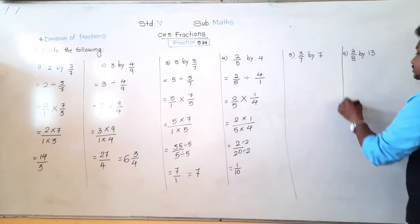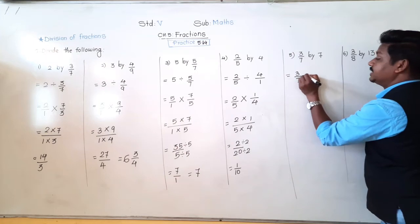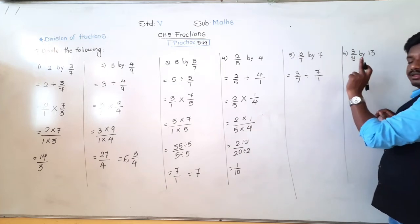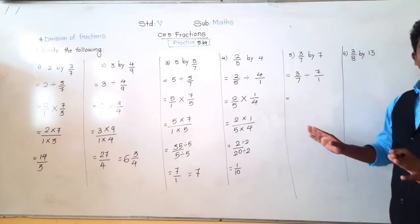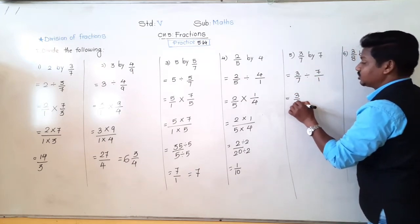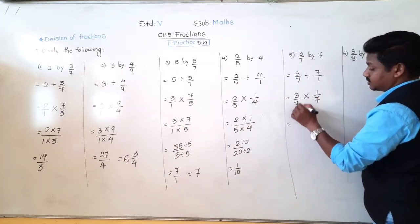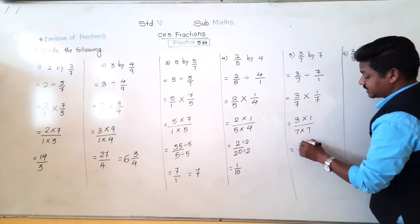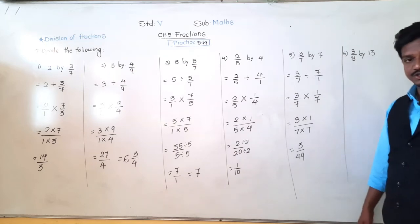Next: 3 upon 7 divided by 7. That means 3 upon 7 divided by 7. Only 7 means it has denominator 1 — every whole number has denominator 1. Now 3 upon 7 — instead of division, write multiplication — and the reciprocal of the second fraction is 1 upon 7. So multiply numerator with numerator and denominator with denominator: 3 × 1 = 3 upon 7 × 7 = 49, giving 3 upon 49. Are 3 and 49 in the same table? No.